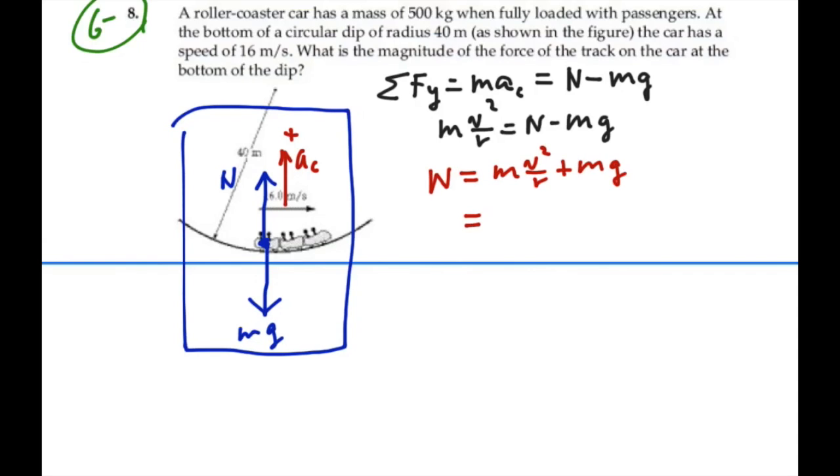If we put in our numbers, this would be 500 times the velocity, which is 16 meters per second, squared, over the radius, which is 40 meters, so v squared over r, plus the weight, which would be 500 times 9.8.